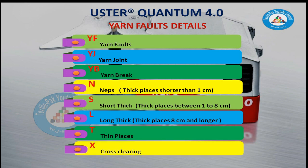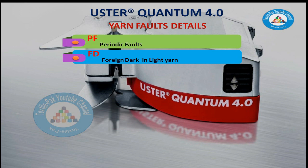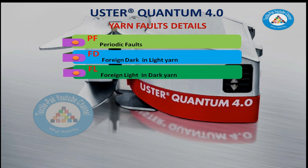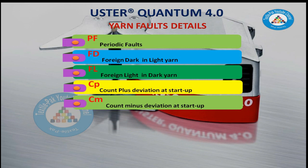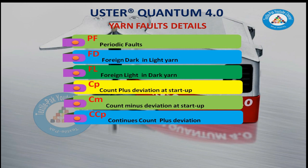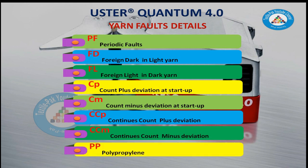X – Cross Clearing Fault, PF – Periodic Faults, FD – Foreign Dark in Light Yarns, FL – Foreign Light in Dark Yarns, CP – Count Plus Deviation at Startup, CM – Count Minus Deviation at Startup, CCP – Count Continues Plus Deviation at Startup, CCM – Count Continues Minus Deviation at Startup, PP – Polypropylene.